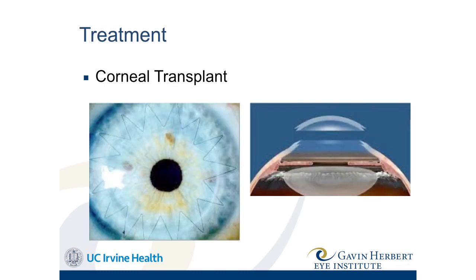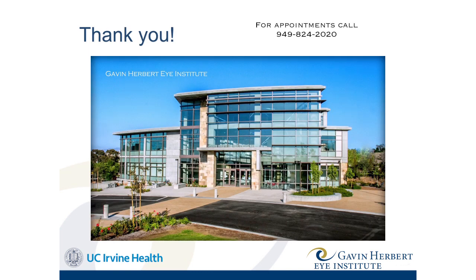And of course, corneal transplants are also an option. So there are a lot of treatment options, and it can be confusing. Patients sometimes say they've seen one doctor who said 'on one hand, glasses; on the other, contacts,' and another who said 'on one hand, cross-linking; on the other, a corneal transplant.' And finally, one patient said they just needed a doctor who only has one hand so someone can tell them exactly what to do.